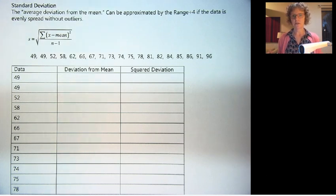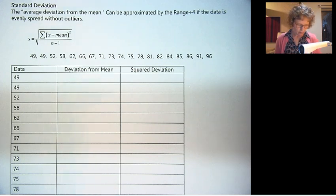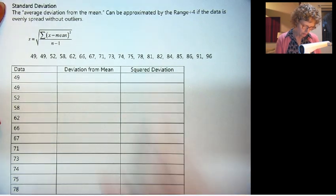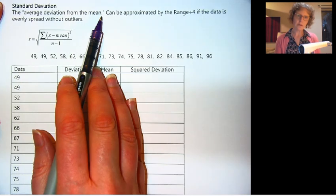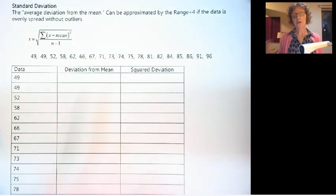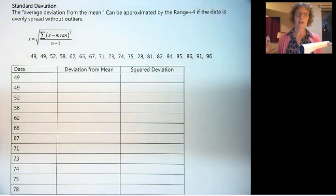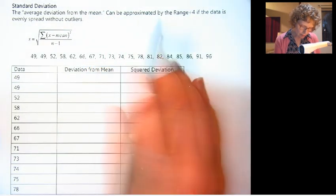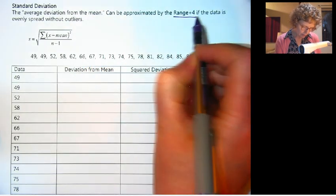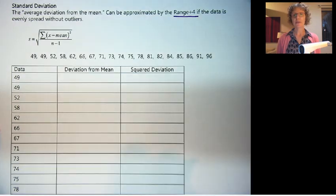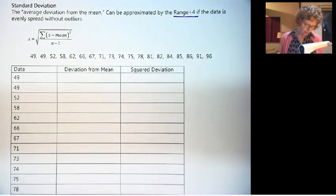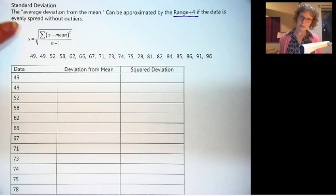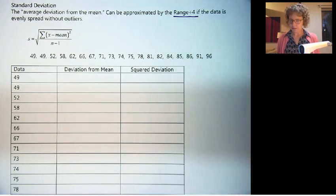There's four things we need to describe: shape, center and spread, and outliers or unusual features. This is one of the measures of spread - standard deviation. You could think of it as the average deviation from the mean. It's how far away the subjects are on average from the mean. We can approximate it by the range divided by 4 if the data is evenly spread without any outliers. We're going to calculate the actual standard deviation and the approximation and see how they compare.